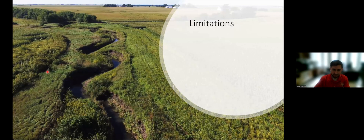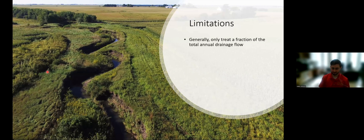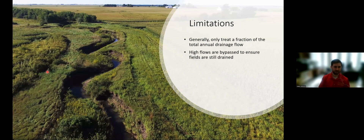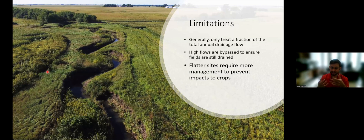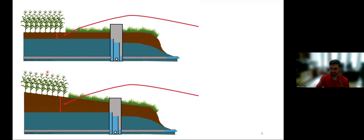We know there are limitations. These practices don't treat all of the drainage. Edge-of-field practices, including saturated buffers, are really designed to treat only a fraction of total annual drainage flow, because we design these systems so that high flows can still bypass — to not back up water into the field, which is really important for crop production. That's why sites that are flatter, the topic of this talk, require more management to prevent potential impacts to crops.